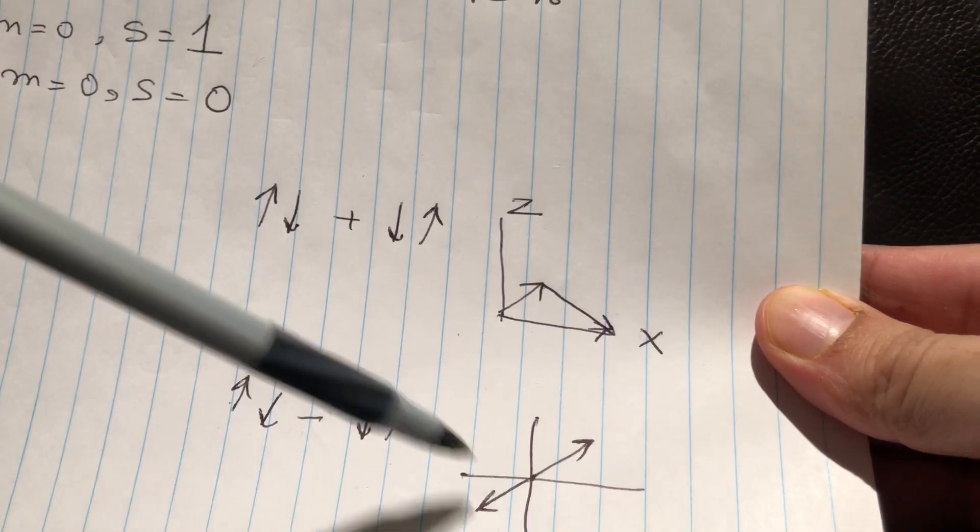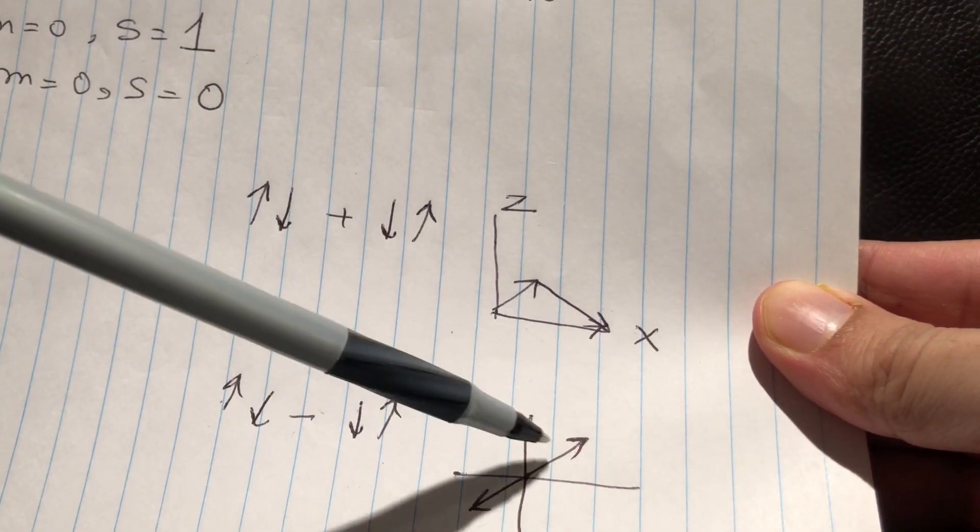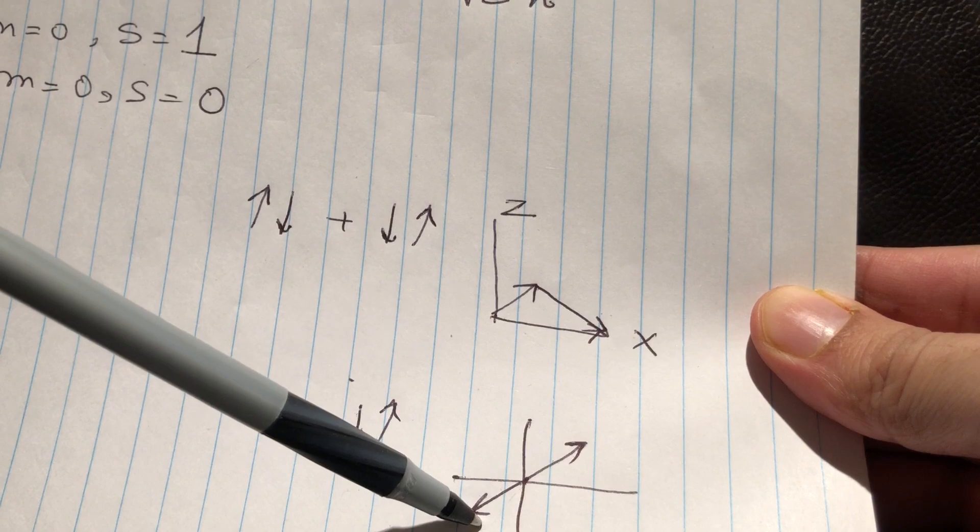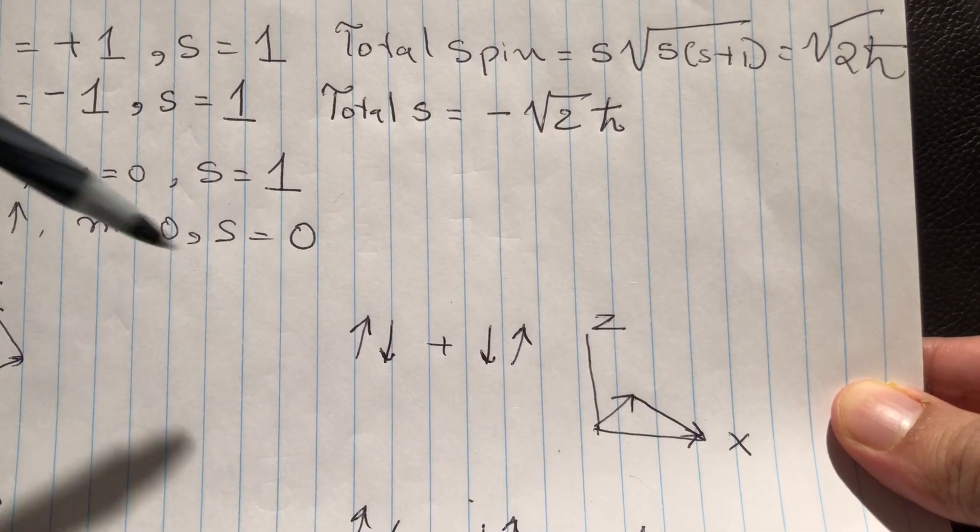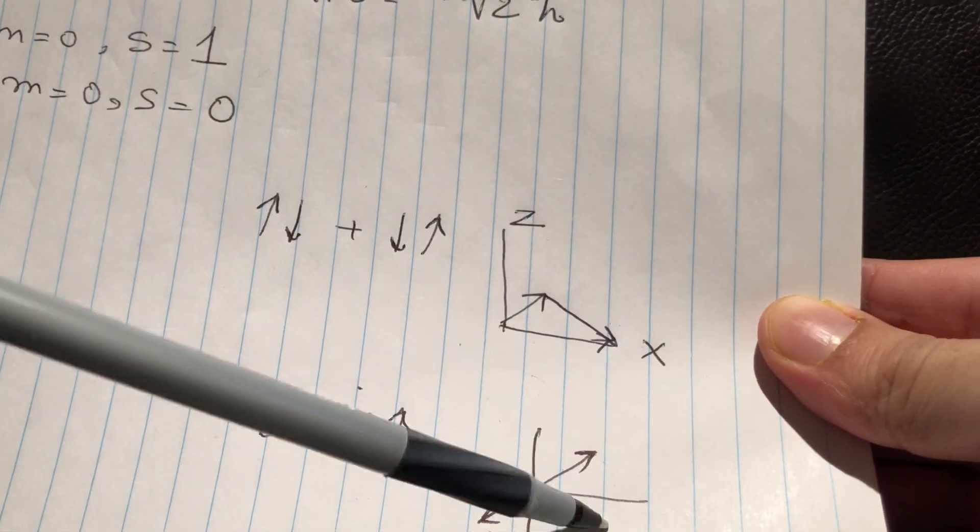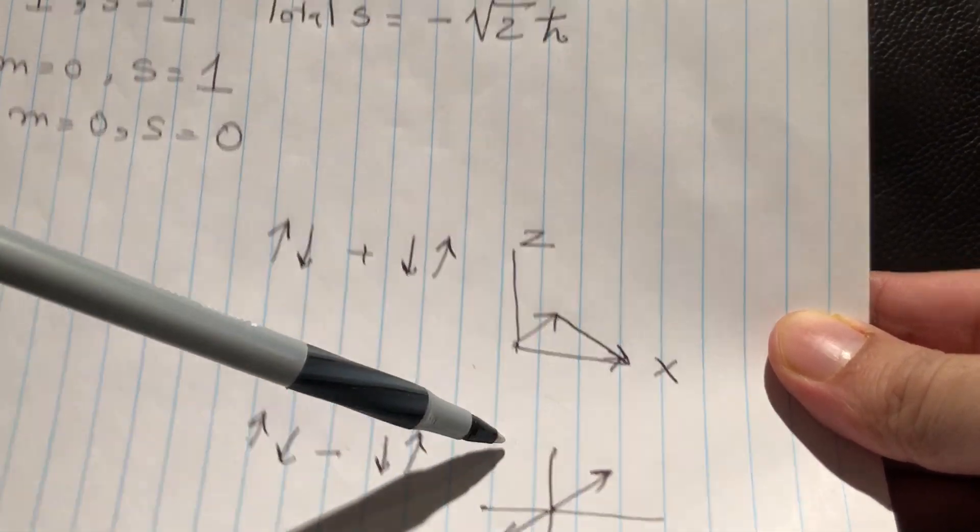Now, in the minus case, the z components are exactly opposite to each other. So the z component is zero and s component is zero because in no other direction they are being combined.